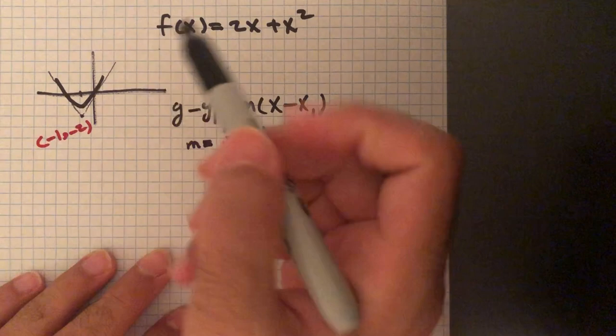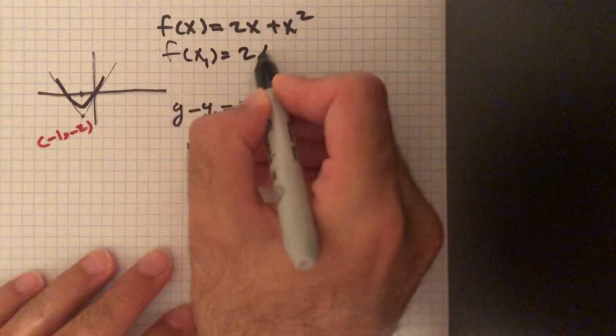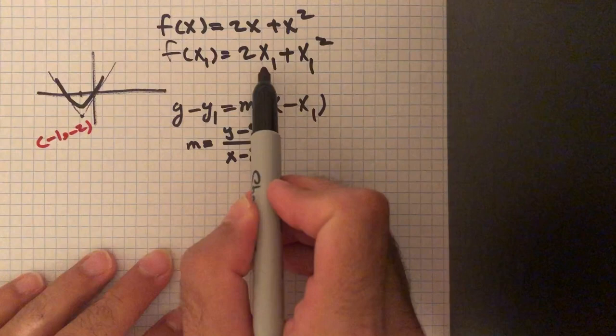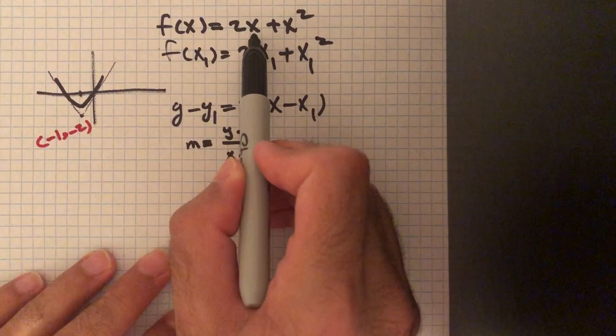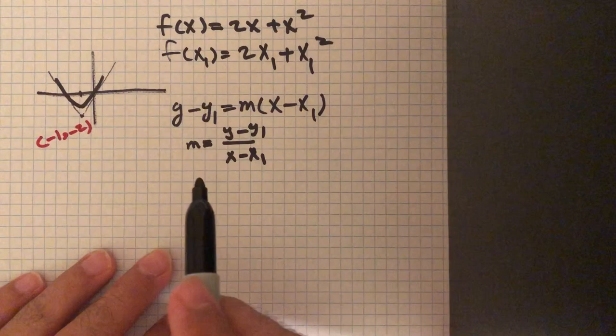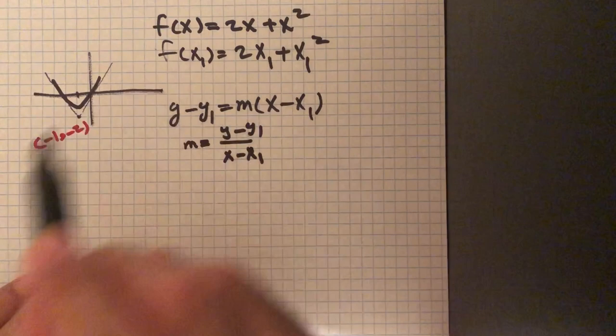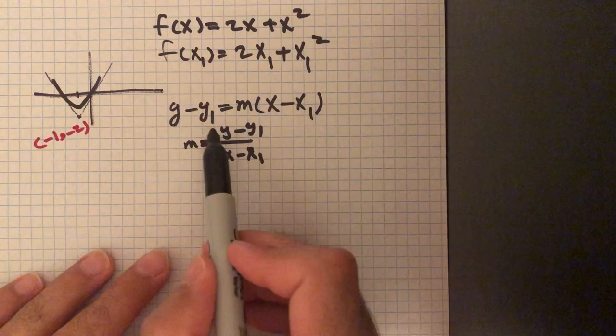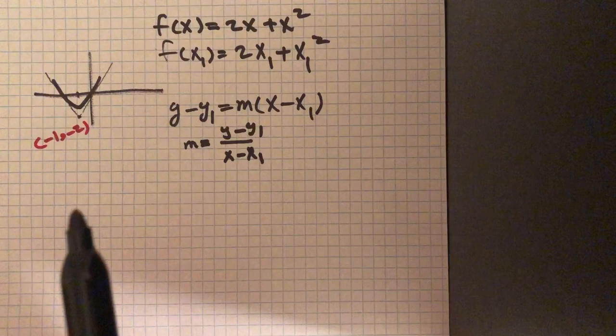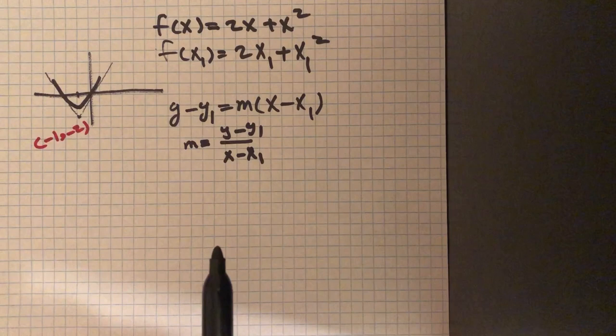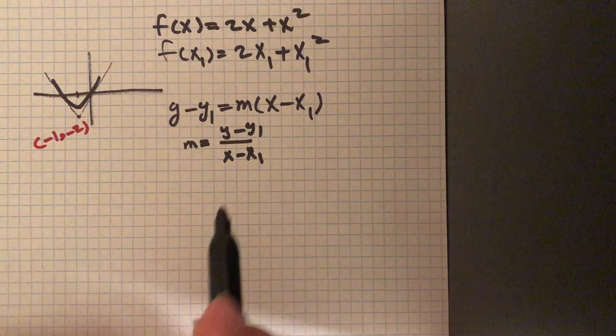So f of x1 equals 2x1 plus x1 squared. X1 is a solution to this function. We can also say that y1 is f of x1. So let's plug in whatever we have into this formula in order to get the equation for the tangent line.